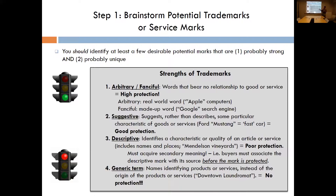Next up, we have suggestive marks. These are marks that would suggest some kind of connection with the good or service, but don't hit the nail on the head too directly. For example, Ford Mustang is a fast car, and mustangs are fast horses — but there is a very attenuated logical leap a customer could make: 'Mustang — that must refer to a car because those are also very fast.' You can see that relationship is just more distant.